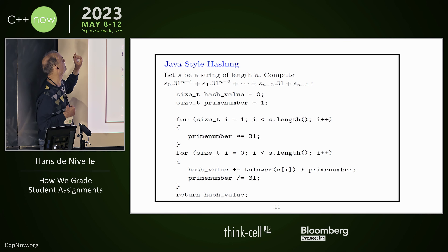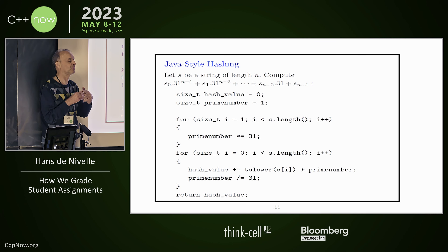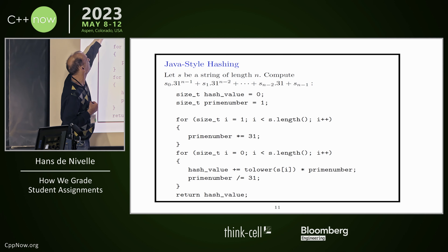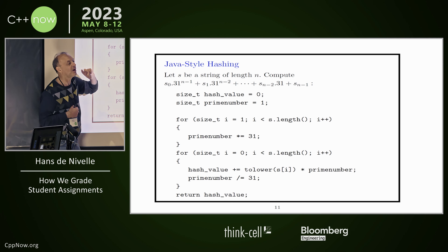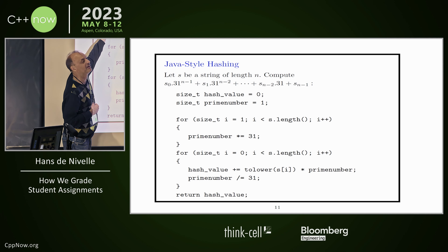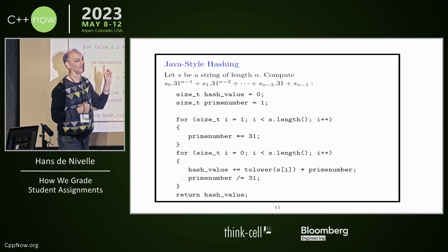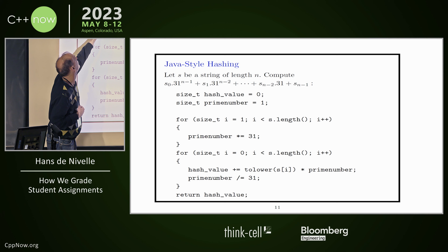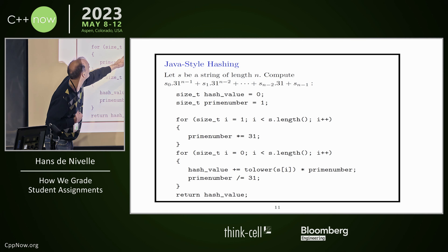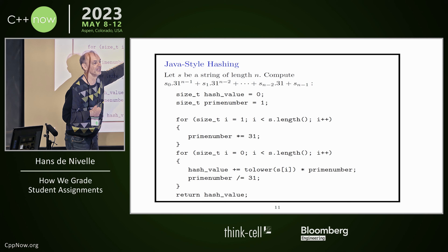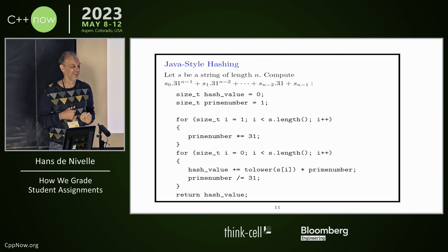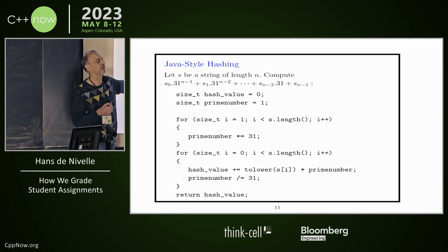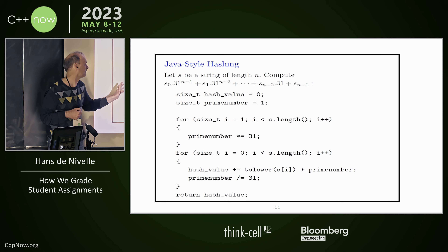Here's a cool one. Students are allowed to compute hash values. They know from Java that hash values are computed like 31 to the power of n minus 1. The problem is you start with 31 to the power of n minus 1 and then get lower powers of 31. One student first computes 31 to the power of the length, and then divides backwards each time to get the lower power. Since it's a hash function, it somewhat works — but it's creative.